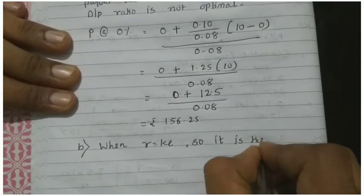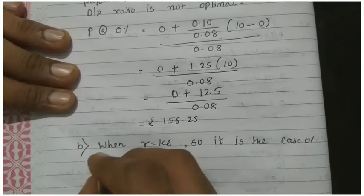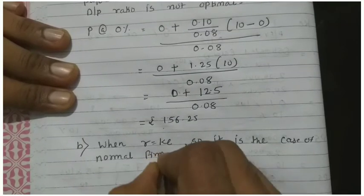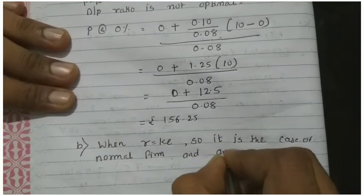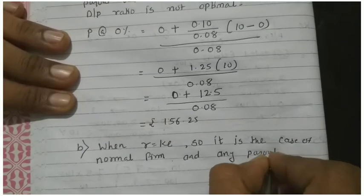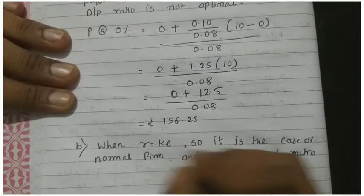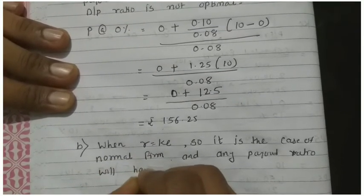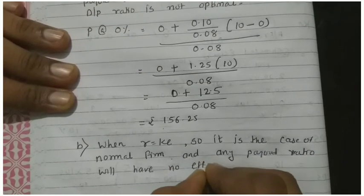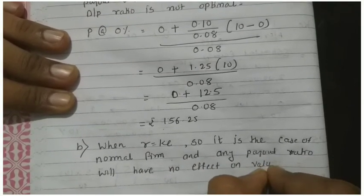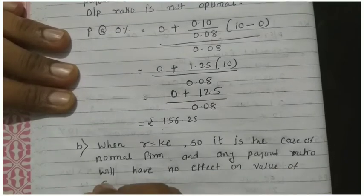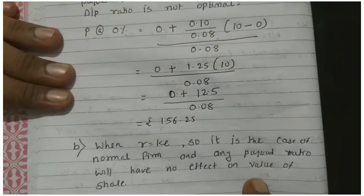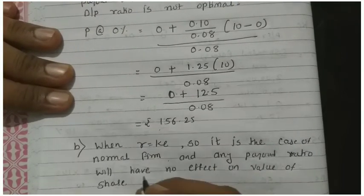When R equal to KE, when R equal to KE, so it is the case of normal firm. It is the case of normal firm and any payout, any payout ratio will have no effect on value of share. In normal firm, any payout ratio will have no effect on the value of the share.